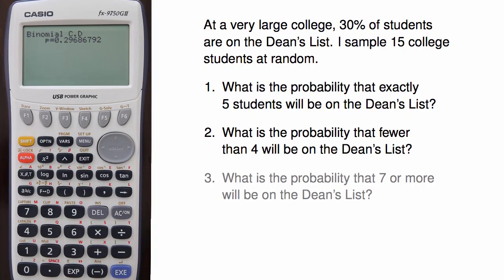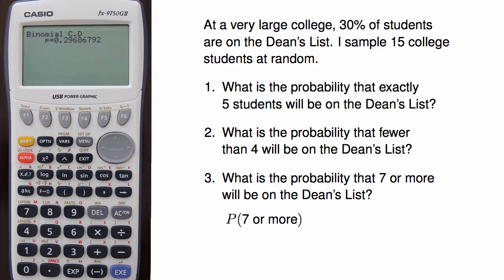The last question is, what is the probability that 7 or more of these 15 students will be on the Dean's List? I want to compute the probability that 7, 8, 9, 10, 11, 12, 13, 14, or 15 students will be on the Dean's List.